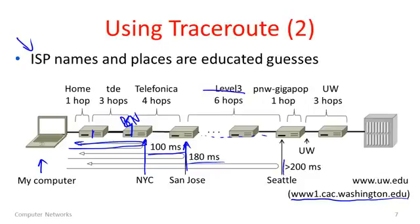At that stage we arrived in Seattle and went through a network called the PNW Gigapop — the Pacific Northwest Gigapop — which is an exchange where different networks come together in Seattle. This network then routed us onto the UW network. By now the round trip time had gone beyond 200 milliseconds. Within three hops inside UW, we arrived at the final destination. TraceRoute gives us a lot of information here — hints about the paths that your packets take through the network. You can try this yourself to find out the paths to destinations throughout the network.